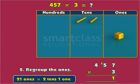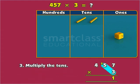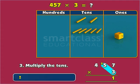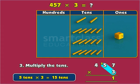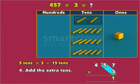Step 3. Multiply the tens. So, 3 times 5 tens is 15 tens. We had two extra tens from the previous step.